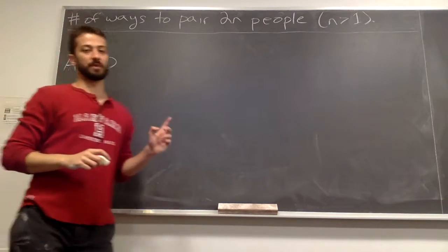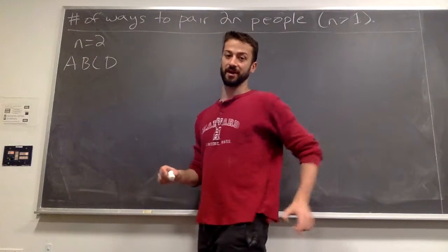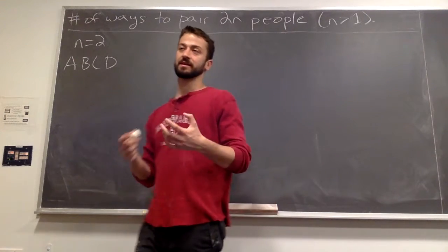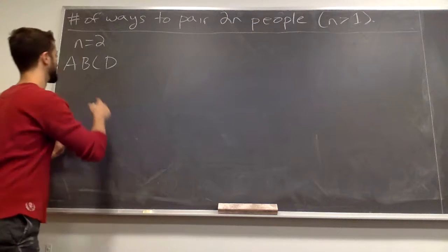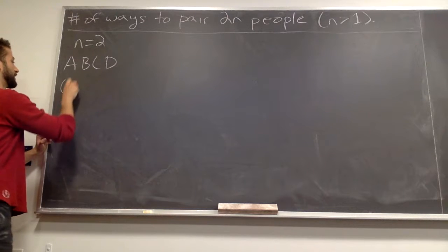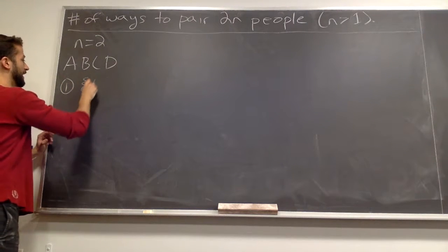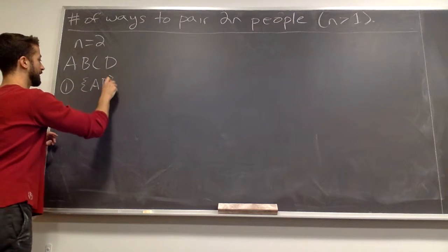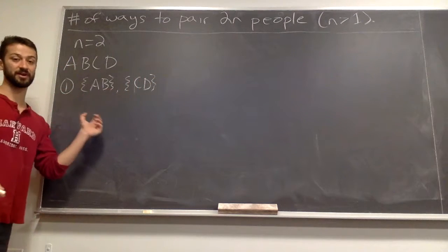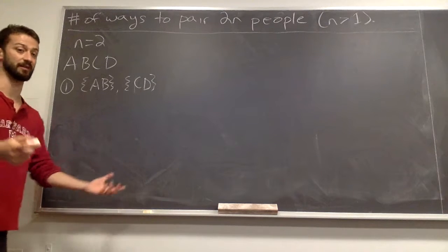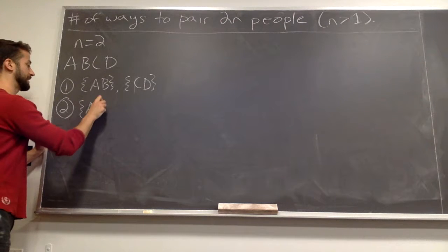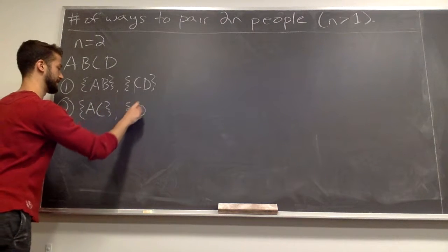So in this case with 4 people, it's actually very easy to count the number of ways to pair them. One specific permutation of this pairing is to put all these people into pairs, so to pair them off. The first permutation is pairing A and B, and pairing C and D. So we put everyone into pairs. We have 2 pairs, but this counts as a single permutation. This is one way to pair everyone. A different way is to say pair A and C, and then pair B and D.